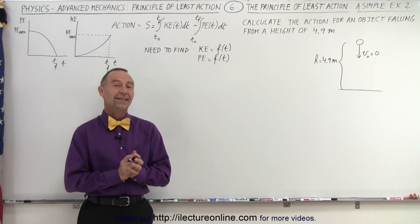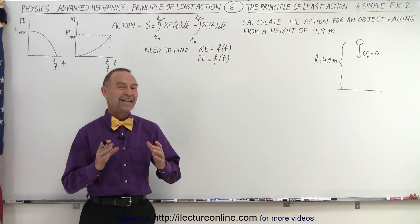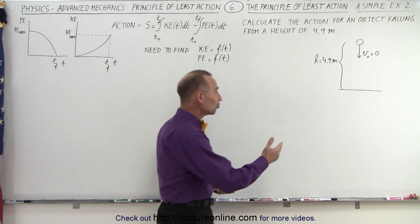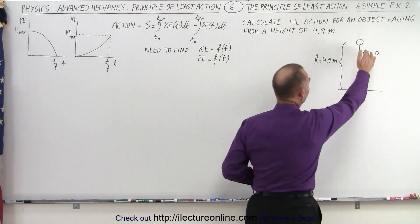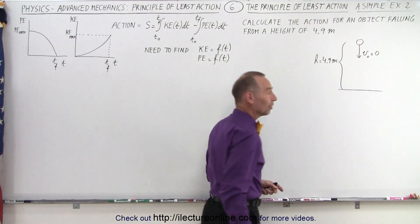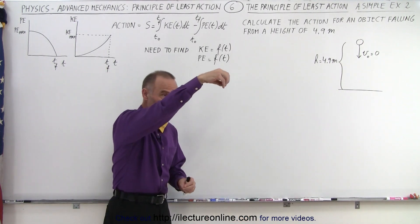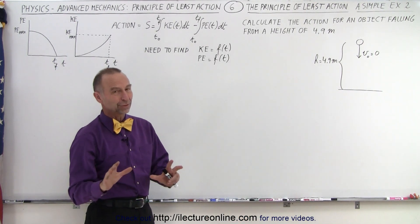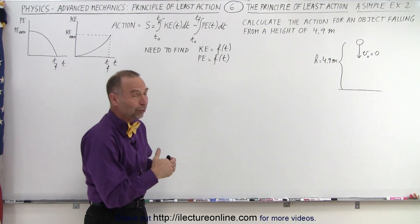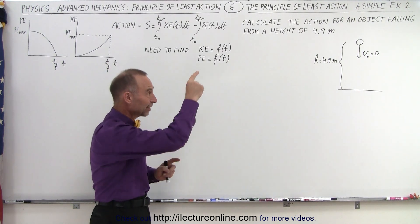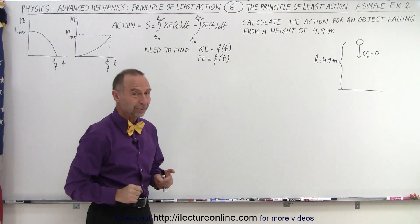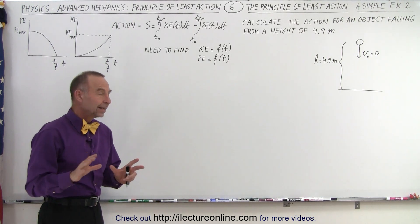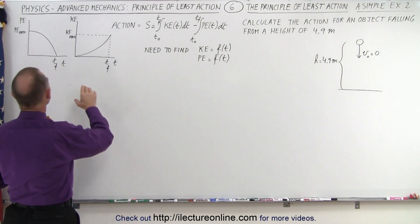Welcome to Electronline. Now let's try to find or calculate the action of an object dropping from a height of 4.9 meters with no initial velocity. We simply drop the object from a height of 4.9 meters. That's strategically chosen because it will take exactly one second for it to hit the ground, which makes the numbers a little bit easier to deal with.